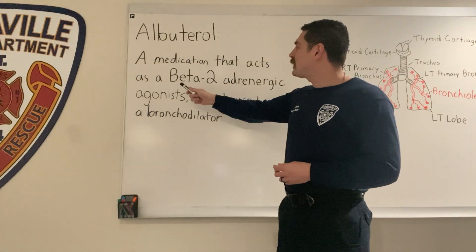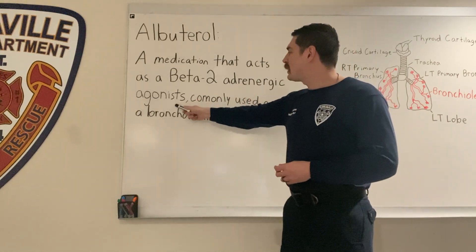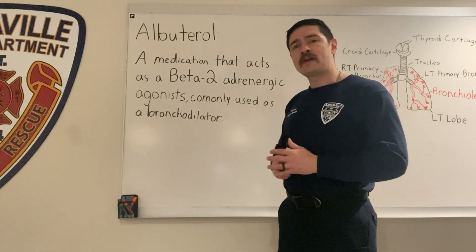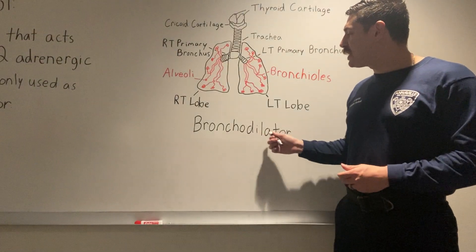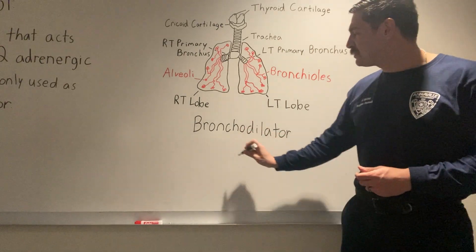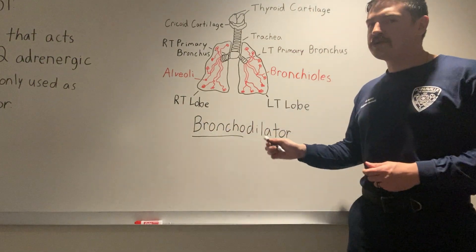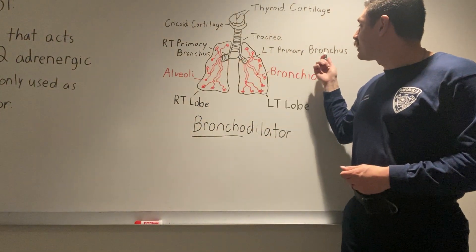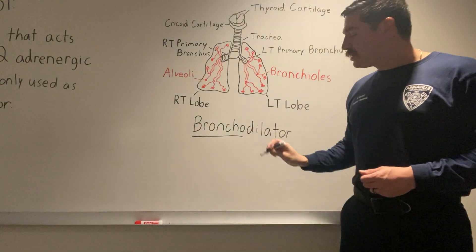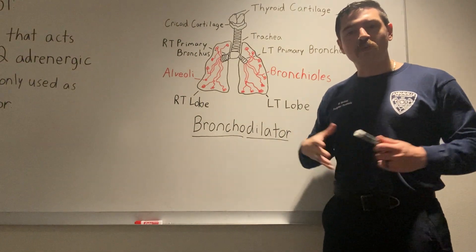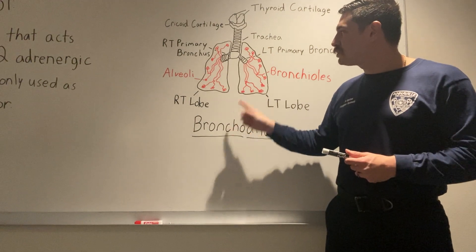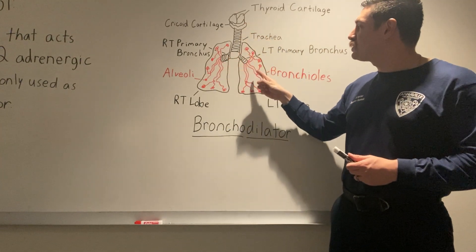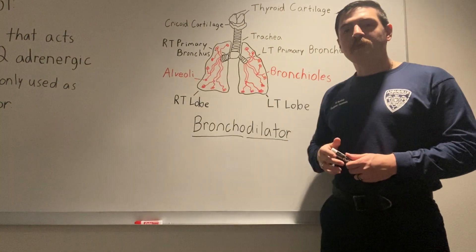Albuterol is a medication that acts as a beta-2 adrenergic agonist, commonly used as a bronchodilator. We can break down the term 'bronchodilator' into two parts: 'broncho,' referring to either the bronchus — such as the right primary bronchus, the larger of the two, or the left primary bronchus — or the bronchioles. 'Dilator' simply means to dilate, or widen, to open up. So we're trying to open up the bronchioles or bronchus, allowing air to pass from the trachea through the bronchus, bronchioles, all the way down to the alveoli where gas perfusion can take place.